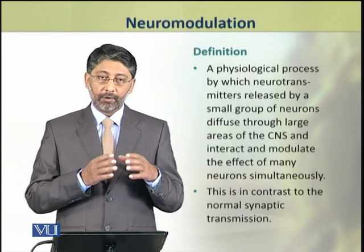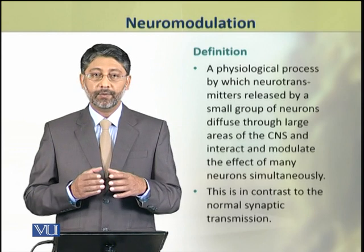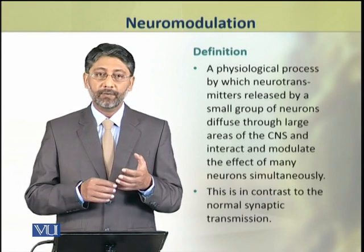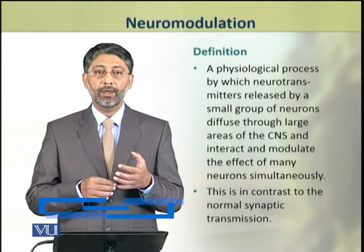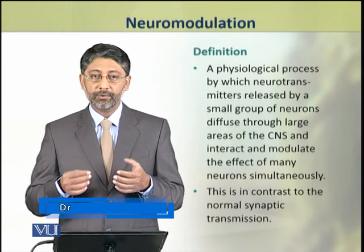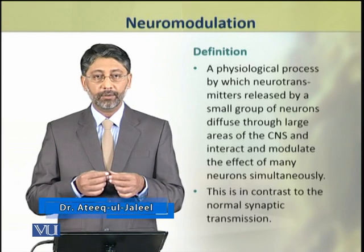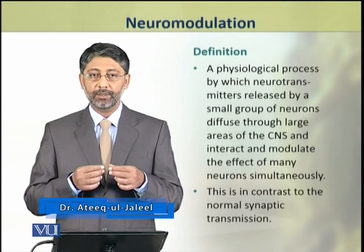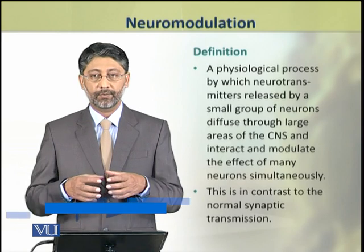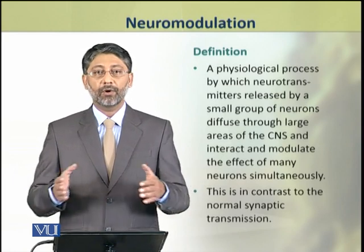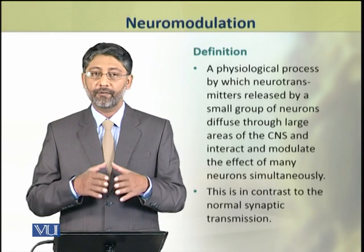یہ phenomena normal neurotransmission سے اس طرح سے مختلف ہے کہ ایک presynaptic cell جس neurotransmitter کو release کرتا ہے وہ ایک ہی post synaptic cell کے اوپر effect کرتا ہے۔ لیکن یہاں پر ایک neurotransmitter جو release ہوا ایک نیوران سے یا کچھ نیوران سے، وہ پھیل جاتا ہے اور اردگرد کے سارے areas کے cells کو effect کرتا ہے۔